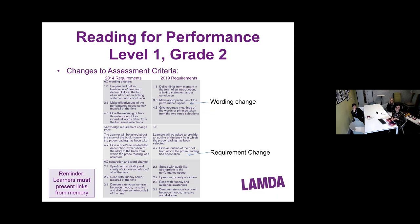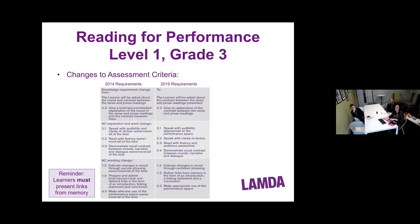For Grade 3, learners will be asked to give an explanation of the contrast between the verse and prose readings, rather than explain the mood of the pieces. There was some confusion over the word 'mood' at this grade, so this change makes it simpler and more accessible. There are also assessment criteria wording changes, and in the actual syllabus — for example, on page 70 of the Reading for Performance section — there's a list of all changes: the right-hand side shows the current 2014 syllabus wording, and the left-hand side shows what it has been changed to.